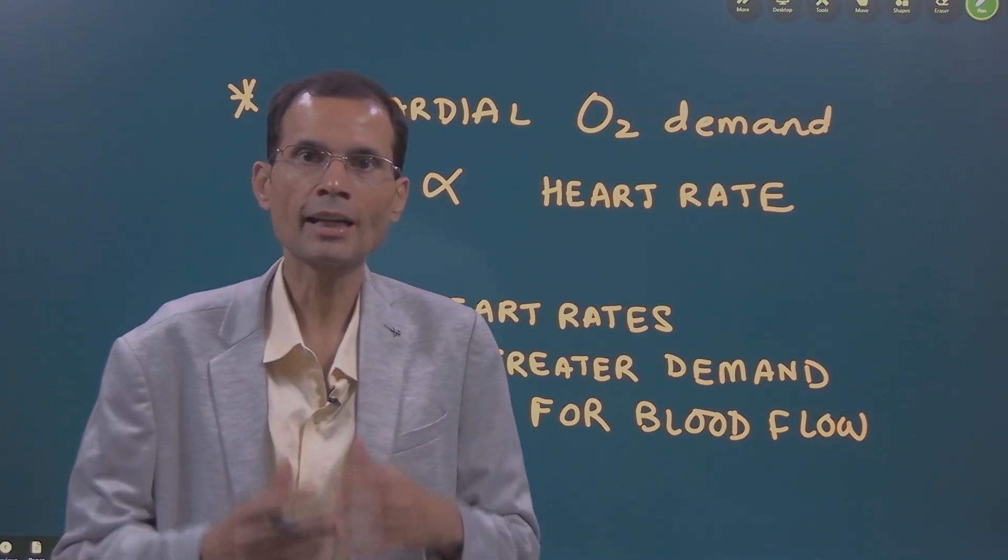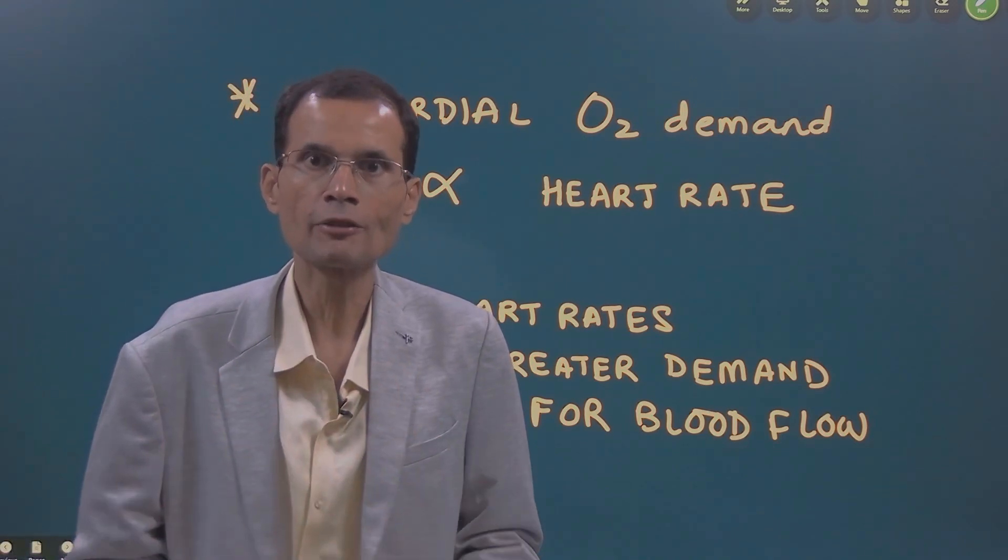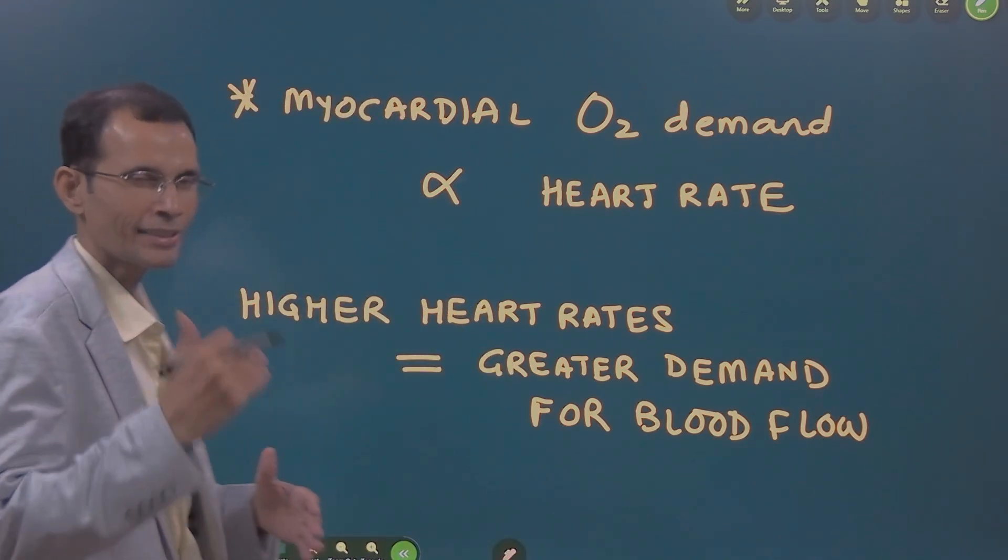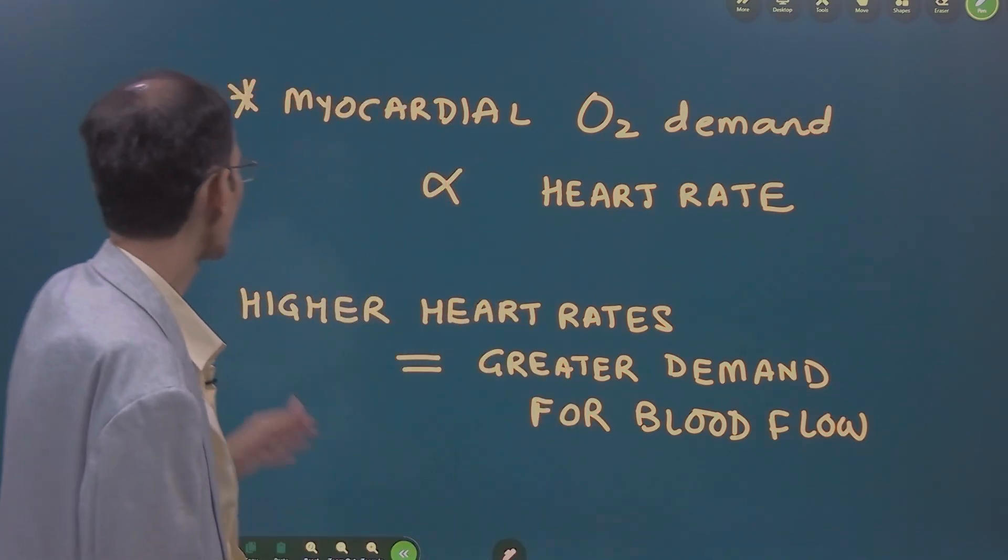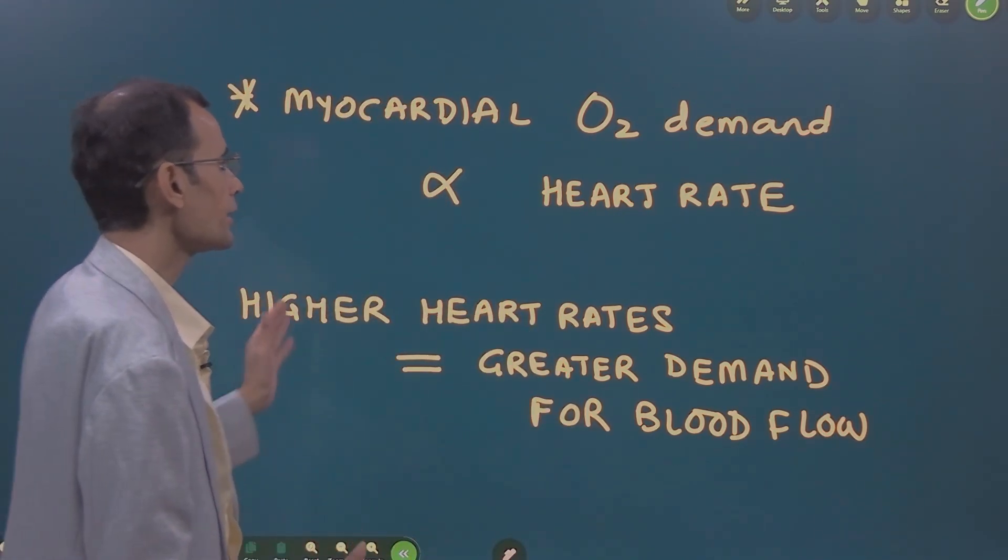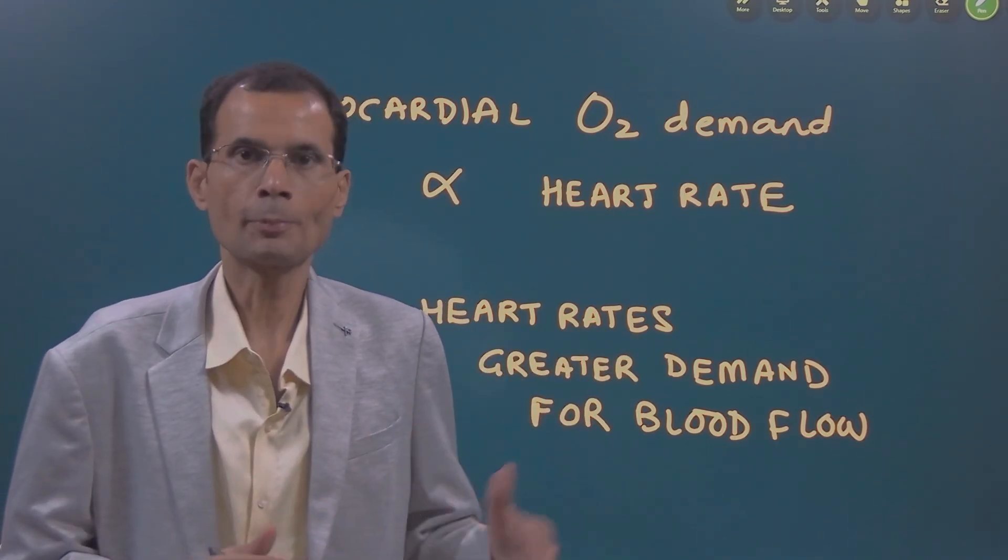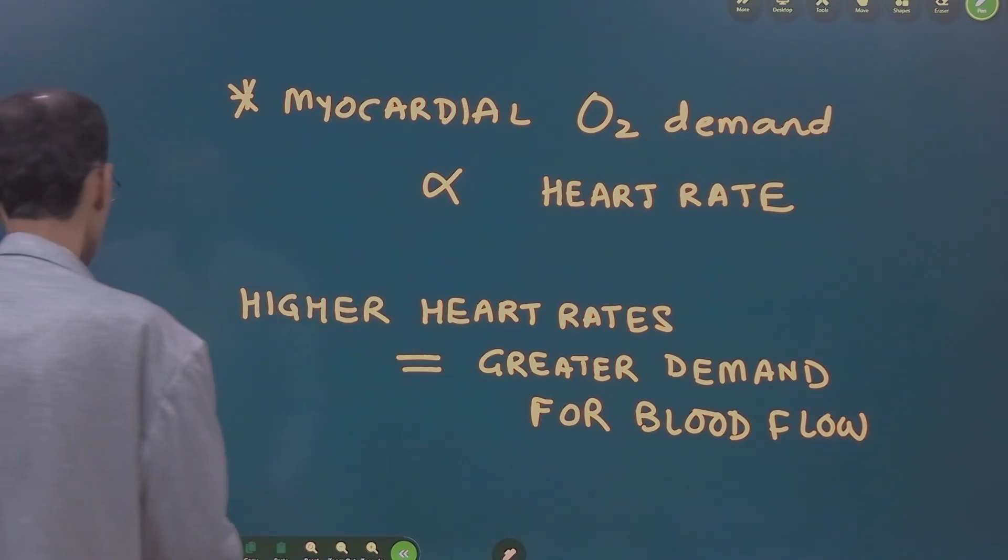Myocardium or heart muscle can receive extra oxygen only by receiving extra blood flow. It has got less reserves of oxygen compared to the other tissues. So, higher heart rates means, it would mean there is a greater demand for blood flow to supply extra oxygen. Its demand is increasing.